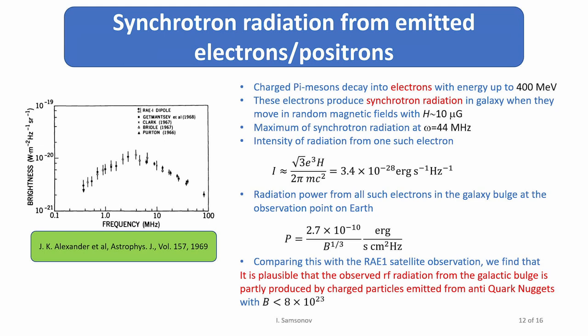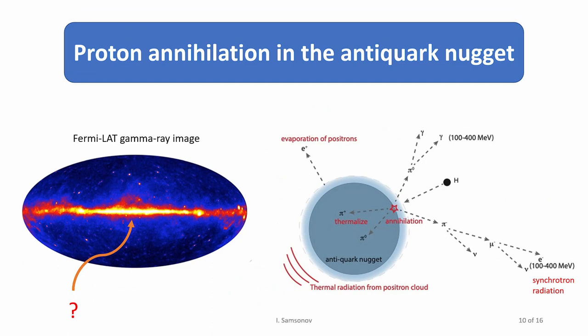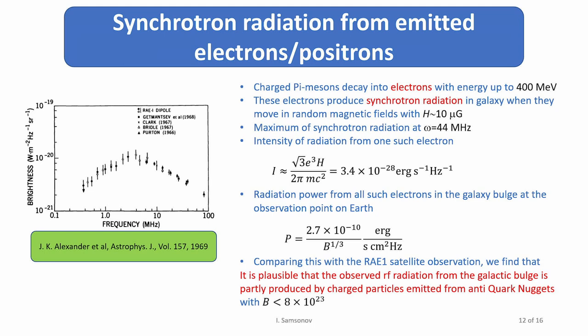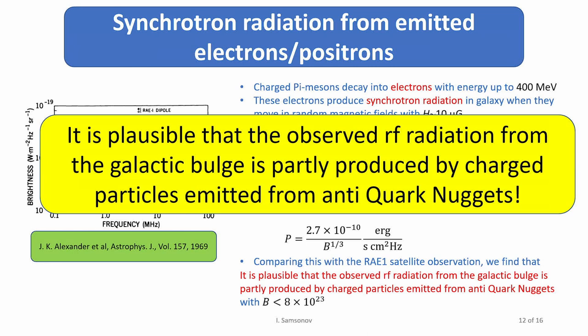Next I'm going to speak about synchrotron radiation. I mentioned that there are a number of electrons. Electrons and positrons are produced, and they are actually ultra-relativistic because they originate from decays of pi-mesons. When such electrons move through the magnetic fields in the galaxy, they should produce synchrotron radiation. We can estimate the flux of this radiation. We did an estimate of the flux of this synchrotron radiation and compared with some observations in the radio frequency radiation from the galaxy. We again find that it is quite plausible that a large part of this radiation may be produced by quark nuggets in the quark nugget dark matter. So that's the second interesting conclusion.